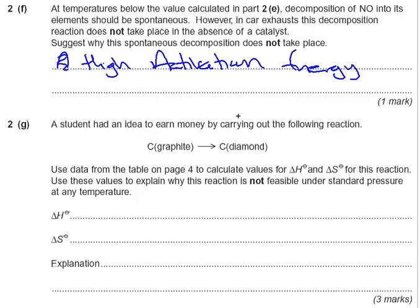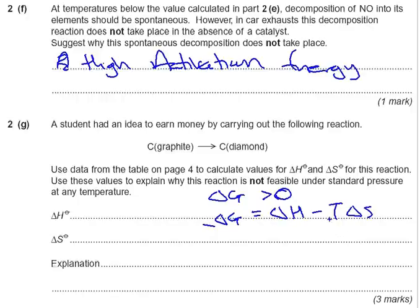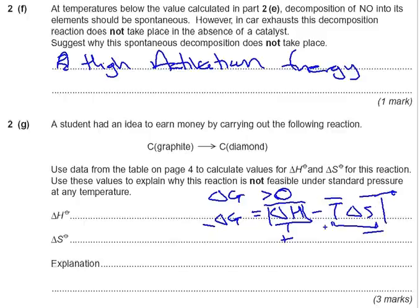Now, if it's not feasible at any temperature, that means delta G is always bigger than zero no matter what happens. So looking at the formula — delta G equals delta H minus T delta S — you'd think that as this quantity gets bigger, at some point it would become zero. But if delta H is positive and minus T delta S is also positive, you'd always have a number bigger than zero.